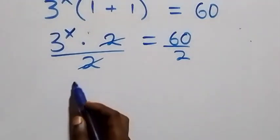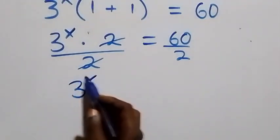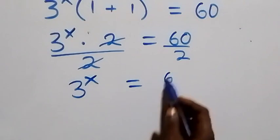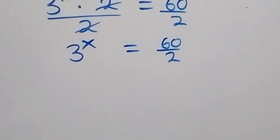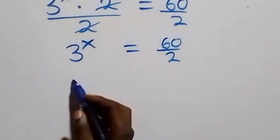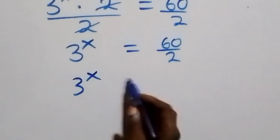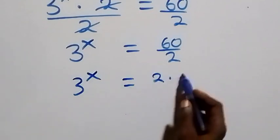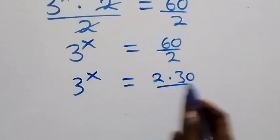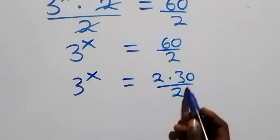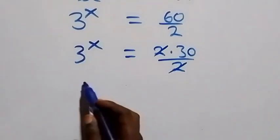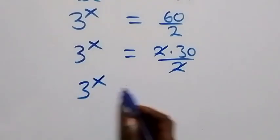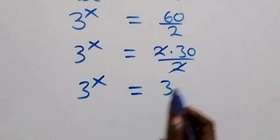We have 3 raised to power x left, equals sixty over two. We can rewrite this as 3 raised to power x equals two times thirty over two. These twos cancel each other, then we have 3 raised to power x equals thirty.